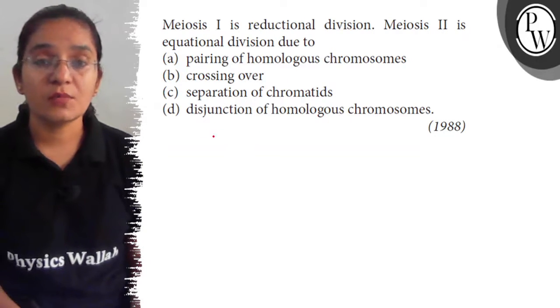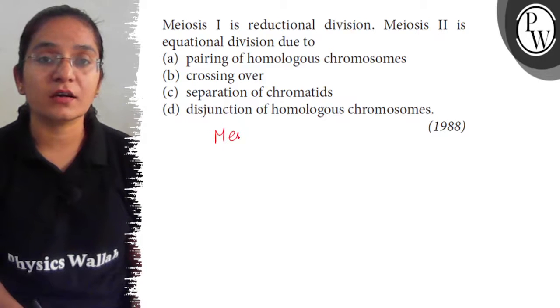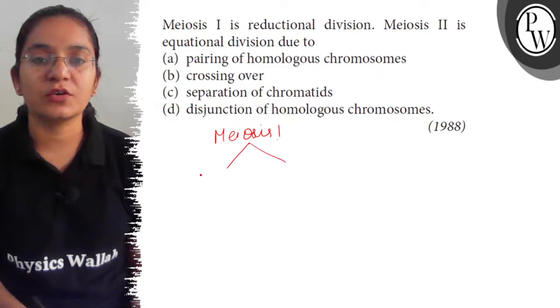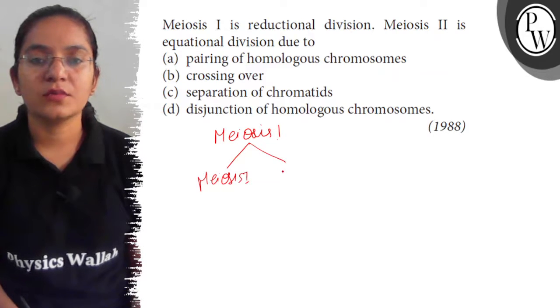Meiosis is one of the divisions that occurs during gamete formation, when the chromosome number reduces to half. This meiosis is further divided into meiosis 1 and meiosis 2.